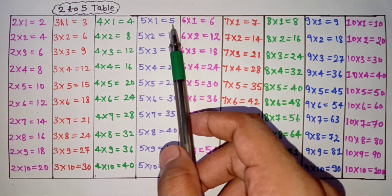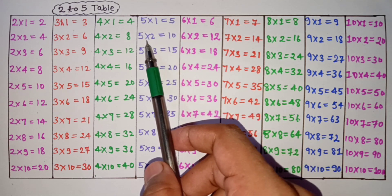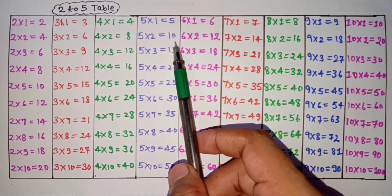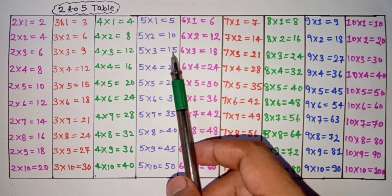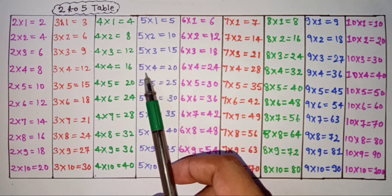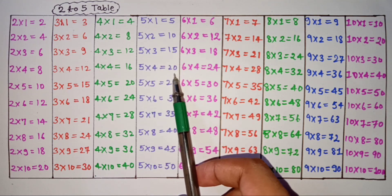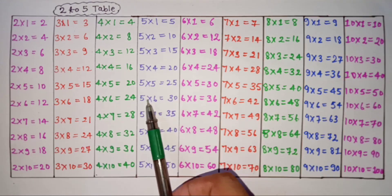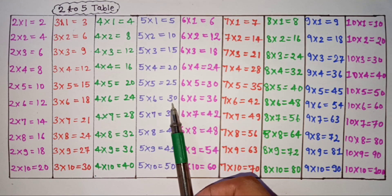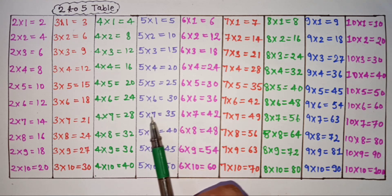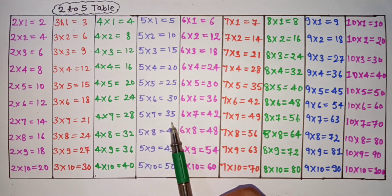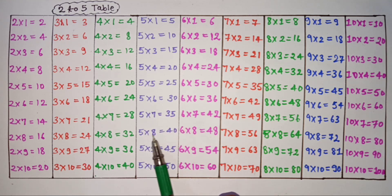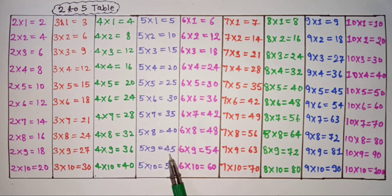5 1's are 5, 5 2's are 10, 5 3's are 15, 5 4's are 20, 5 5's are 25, 5 6's are 30, 5 7's are 35, 5 8's are 40, 5 9's are 45, 5 10's are 50.